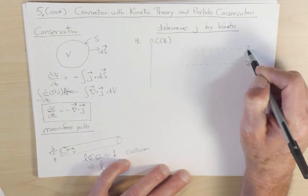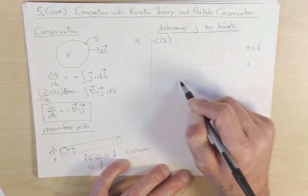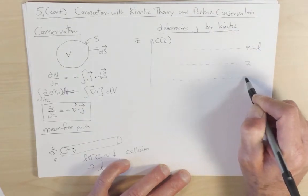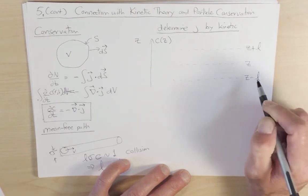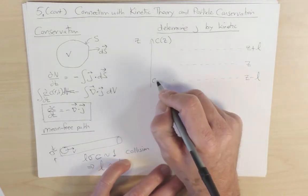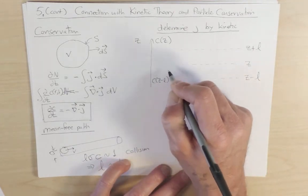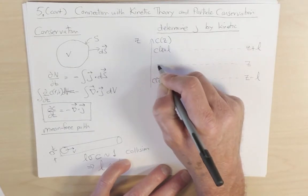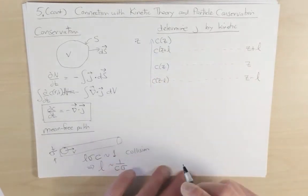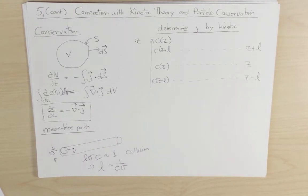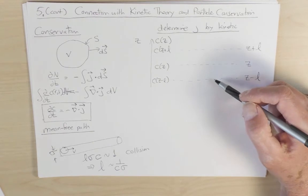So at z plus l, and at z minus l. So here we have concentration c at z minus l, c at z plus l, and c at concentration z. And what I want to compute now, or estimate, is the flux, the net flux of particles through the plane z, because of the fact that the concentrations at z plus l and z minus l are not identical.